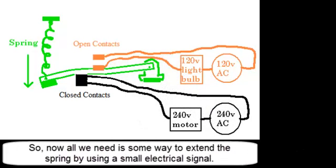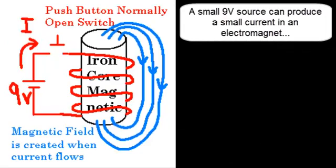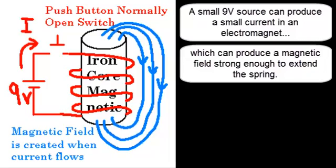So now all we need is some way to extend the spring by using a small electrical signal. A small 9-volt source can produce a small current in an electromagnet, which can produce a magnetic field strong enough to extend the spring.